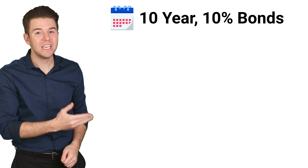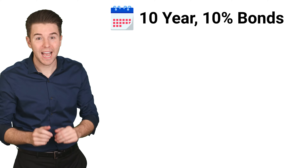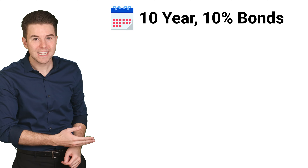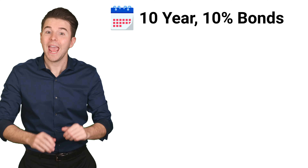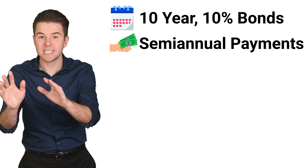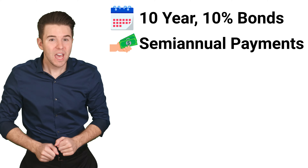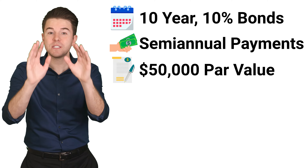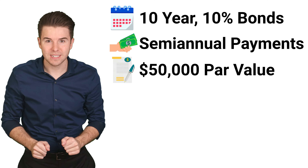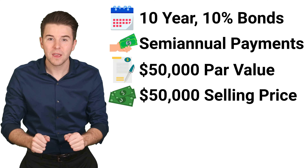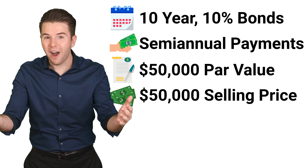Let's do an example. Assume a company issues 10-year bonds on December 31st with a 10% annual contract rate and semi-annual interest payments. The PAR value of these bonds is $50,000 and the bonds sell for $50,000, meaning they sold at PAR.